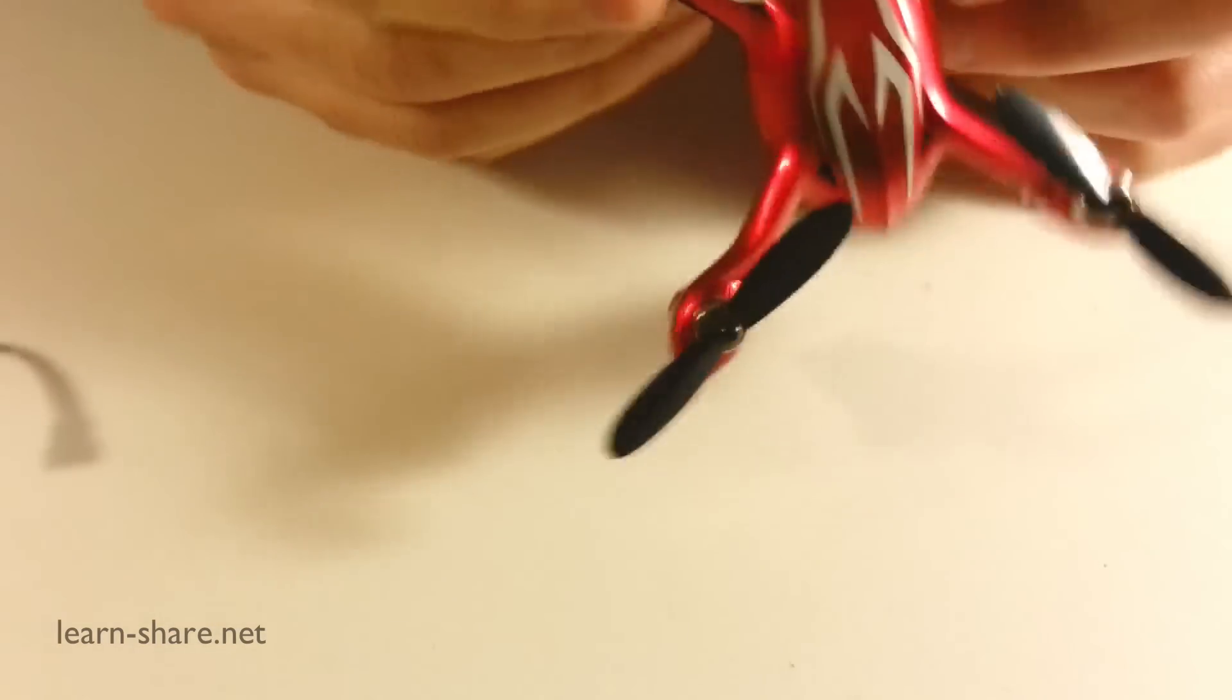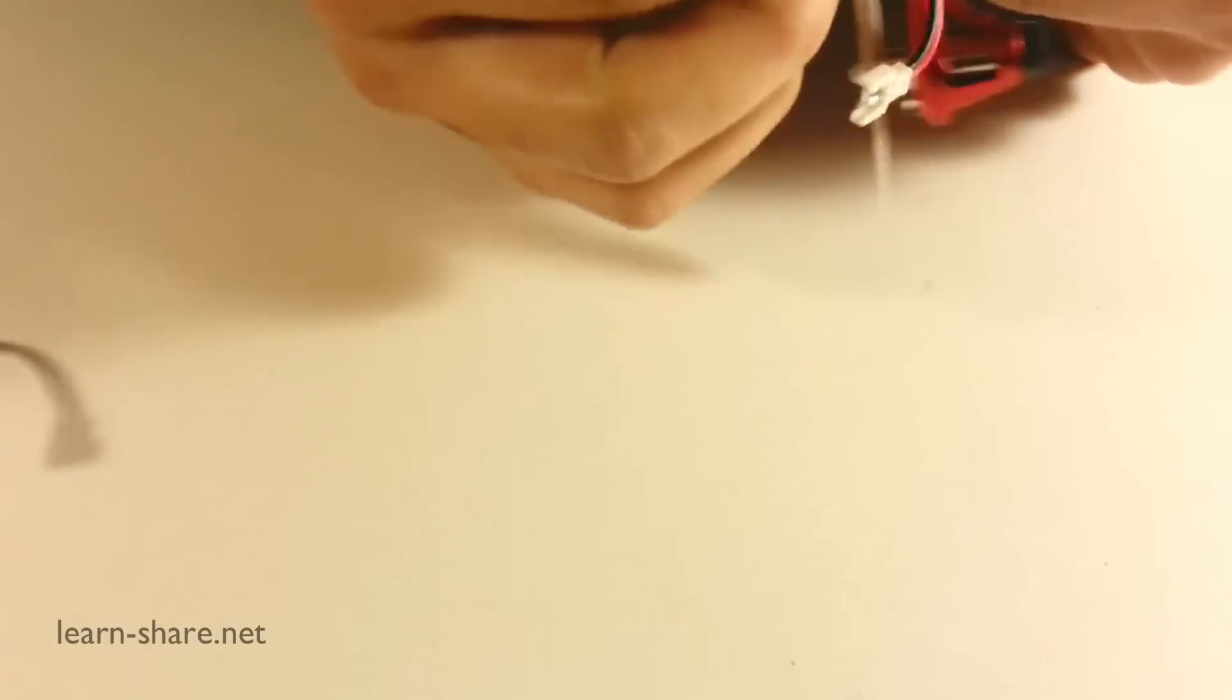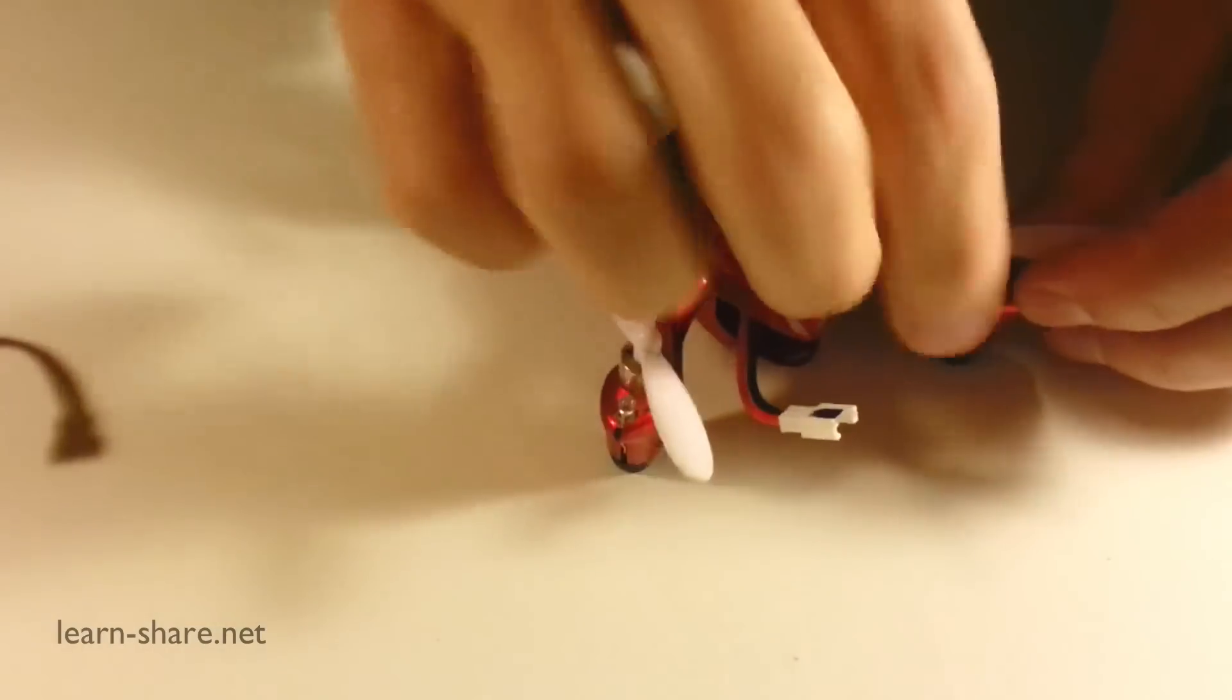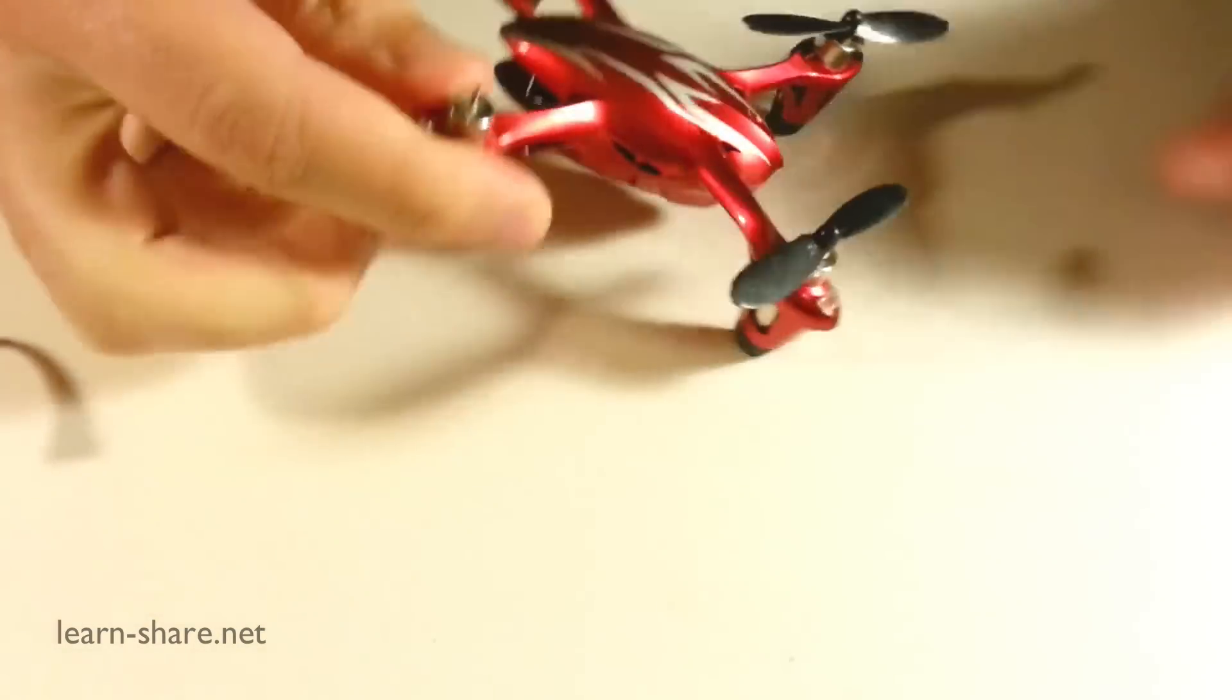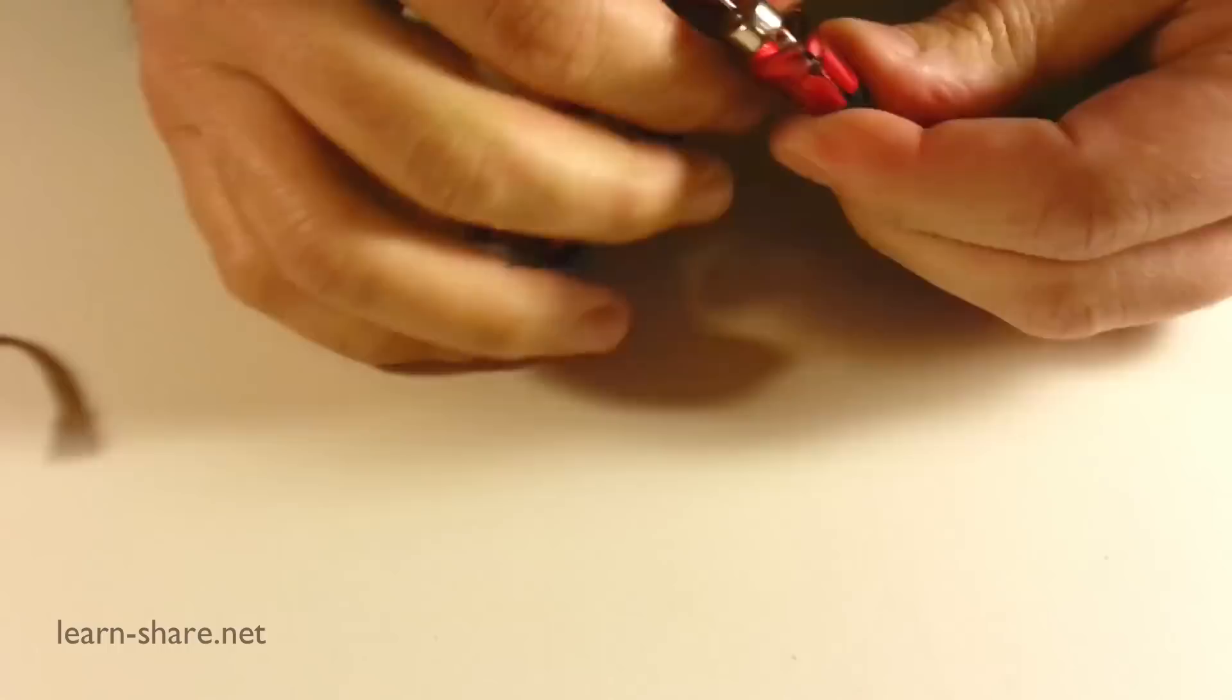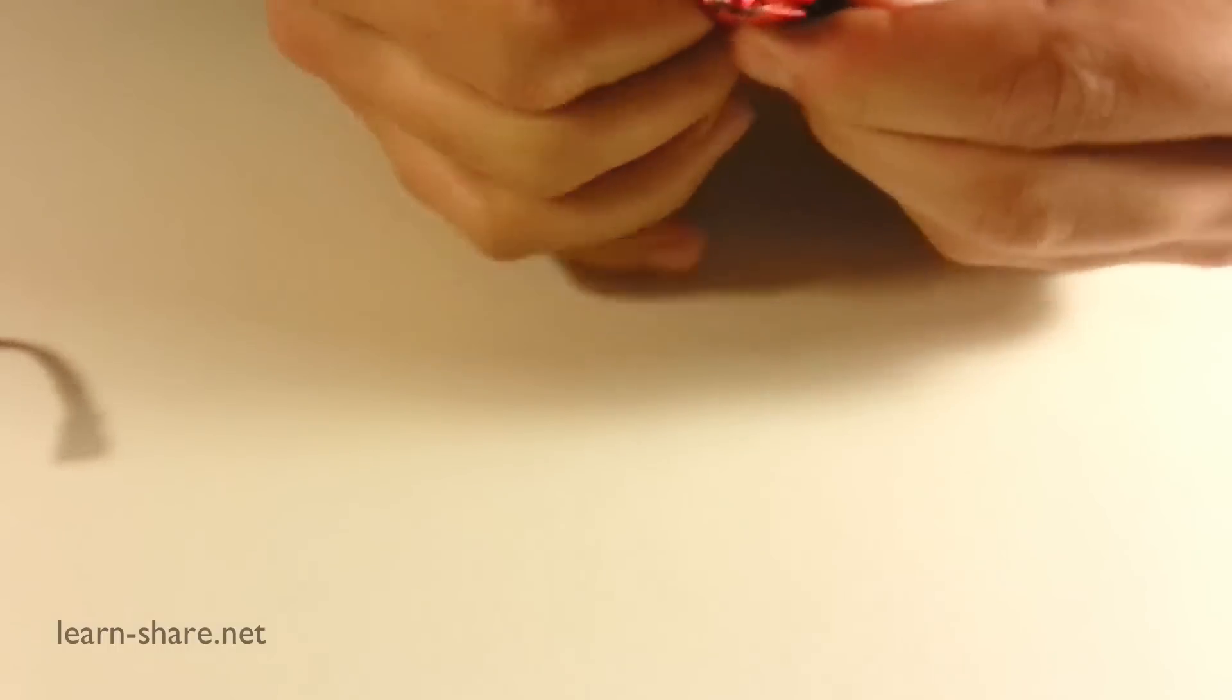Now, remove the propeller of the damaged rotor, and next, pull out the motor itself. If you cannot pull with your fingers, use a plier.